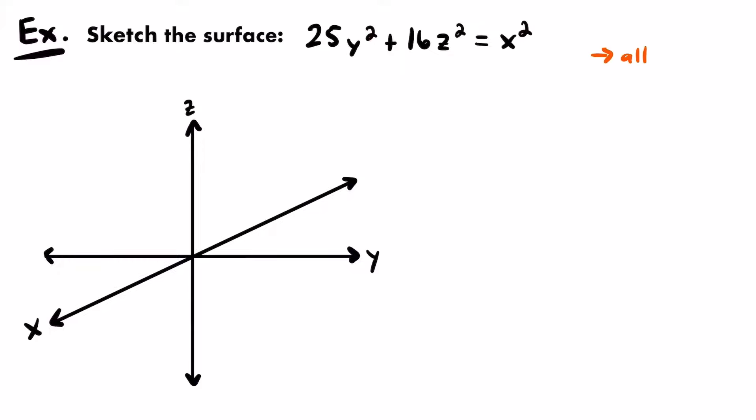We have all squared variables. Another thing I notice is that they appear all positive — or are they? They're not all on the same side of the equation, so we can't make that conclusion yet. Before making any other conclusions about what type of surface this represents, let's get it in a more familiar format similar to a standard equation of a quadric surface. We can do that by subtracting x² from both sides, giving us: -x² + 25y² + 16z² = 0.